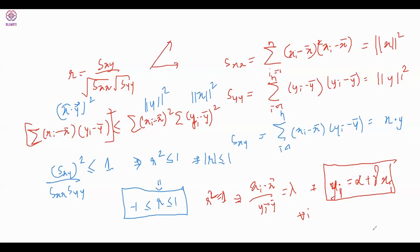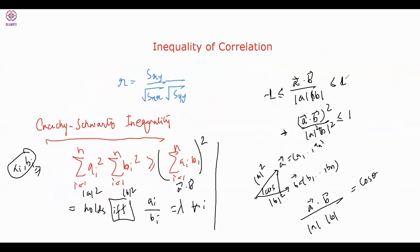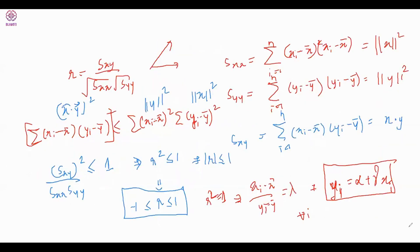Geometrically, the dot product equals one only when the two vectors are perfectly aligned — cos θ = 1 only when θ = 0, meaning the vectors are parallel (multiples of each other). This is the beauty of the geometrical aspect of correlation — how SXY, SXX, and SYY relate through vector geometry.